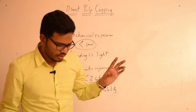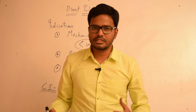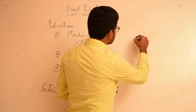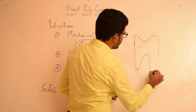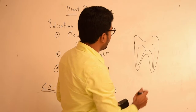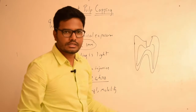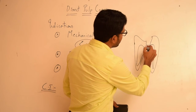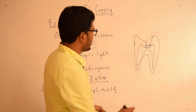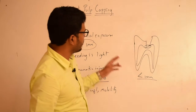Because of these drawbacks, direct pulp capping is not advised in primary teeth. Coming to the procedure — consider a tooth with the inner pulp cavity. While preparing a cavity or during caries excavation, there can be a mechanical exposure of pulp. In case of trauma there can also be exposure of pulp. If this pulpal exposure is less than 1 mm approximately — a pinpoint exposure — we can go for direct pulp capping.